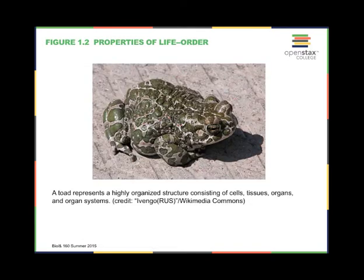Order should be pretty straightforward. Living organisms are made of very specific parts that combine together in very specific ways to form their bodies. Living organisms also perform very specific processes at very specific times and in very specific sequences. The toad in the photograph is a good example. All living things, big and small, have very specific and predictable order.